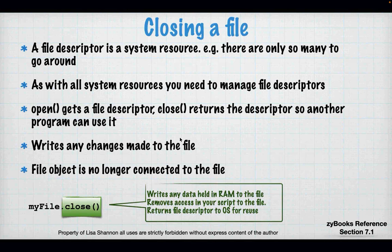Close does something else — it writes any changes you've made to the file to disk. So what am I talking about? Didn't that happen when I wrote to the file? Well, no. Close says if there's anything that hasn't been written to this file, write it now. So if you use a file and don't close it, there may never actually be any change made to the file on disk, because a lot of times Python processes things in RAM and then it will write it when it feels like it.